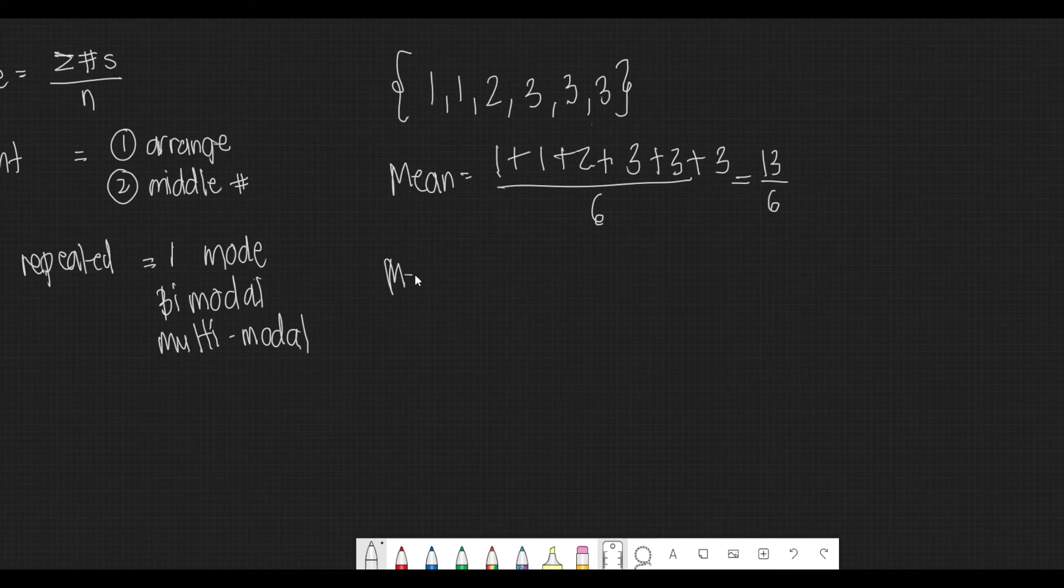Now, the median would be the midpoint, or the middle number. Since our data is already arranged from least to greatest, we just need to observe the middle term. Since the given set has an even number of data, there would be 2 middle numbers, and those are 2 and 3.